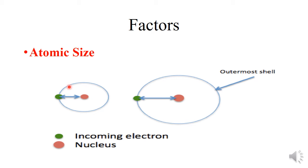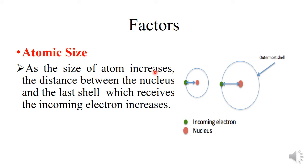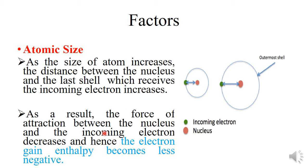In the case of a small atom, the distance between the nucleus and the outermost shell which receives the incoming electron is less. But as the size of the atom increases, this distance increases. As a result, the force of attraction between the nucleus and the incoming electron decreases, and hence the electron gain enthalpy becomes less negative as the size grows.